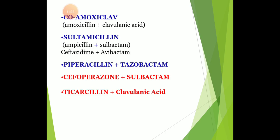Avibactam is a new beta-lactamase inhibitor that inhibits a wide range of beta-lactamases, particularly those produced by Pseudomonas aeruginosa. It improves the antimicrobial effects of ceftazidime, which is an anti-pseudomonal cephalosporin. Avibactam is available in a combination of 2 g ceftazidime and 500 mg avibactam, indicated for complicated intra-abdominal infections along with metronidazole, and complicated UTI including pyelonephritis. The organisms sensitive include E. coli, Klebsiella pneumoniae, Pseudomonas aeruginosa, and Proteus. It is given intravenously as an infusion over 2 hours, at 8-hourly intervals for 10 to 14 days.